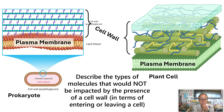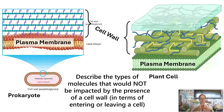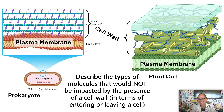Cell walls also help with osmosis and turgor pressure. When a plant cell fills with water, the cell wall prevents that cell from bursting. So the cell wall offers protection and support. It shouldn't interfere much with simple diffusion or facilitated diffusion of small molecules that can just go through the membrane. That's the summary of membrane permeability.